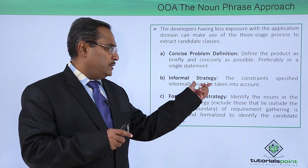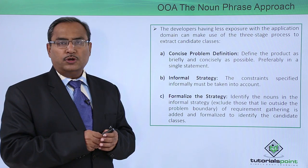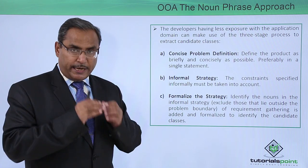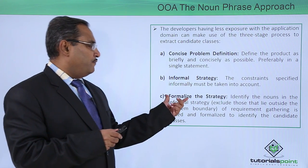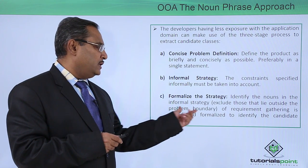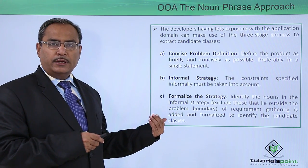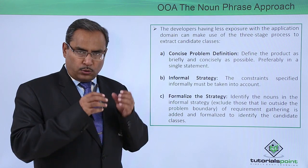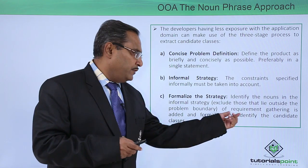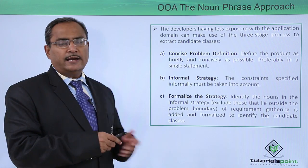Next is informal strategy — the constraints specified informally must be taken into account. Then formalize the strategy: identify the nouns in the informal strategy and exclude those that lie outside the problem boundary. So we are considering the nouns, and those nouns which are outside of the problem boundary should be excluded. Requirements gathering is then formalized to identify the candidate classes.